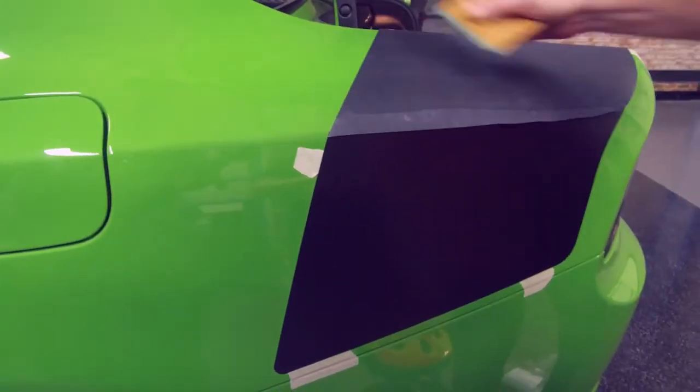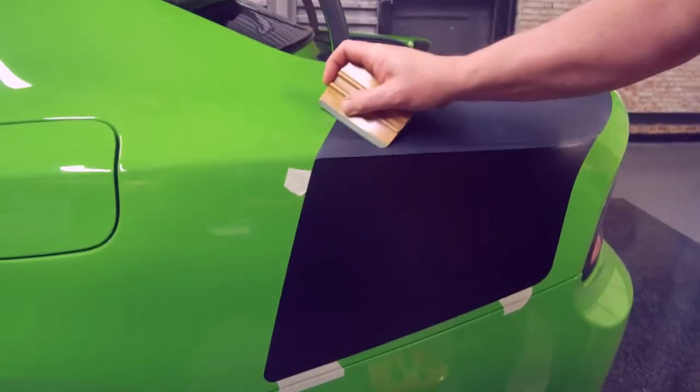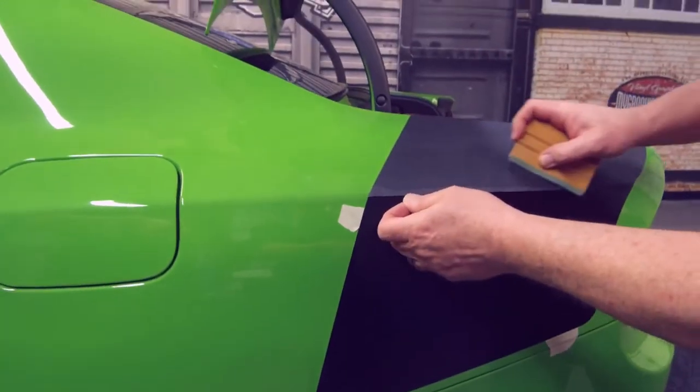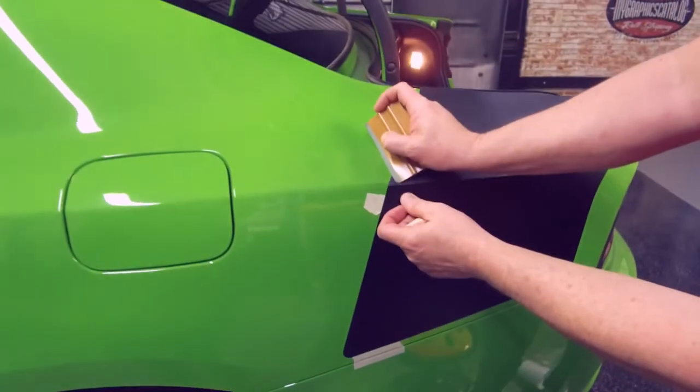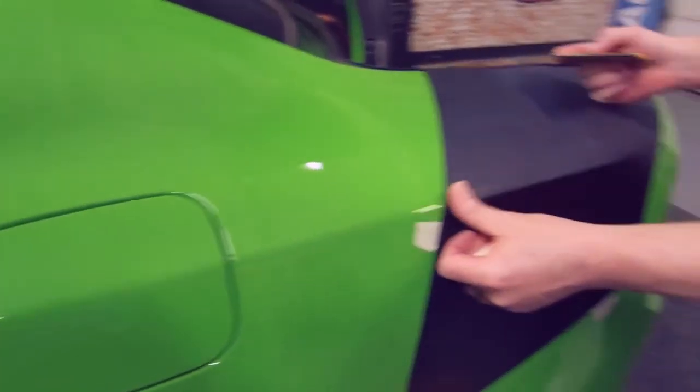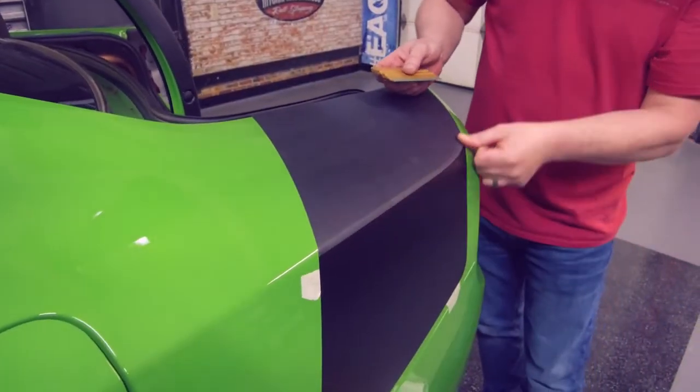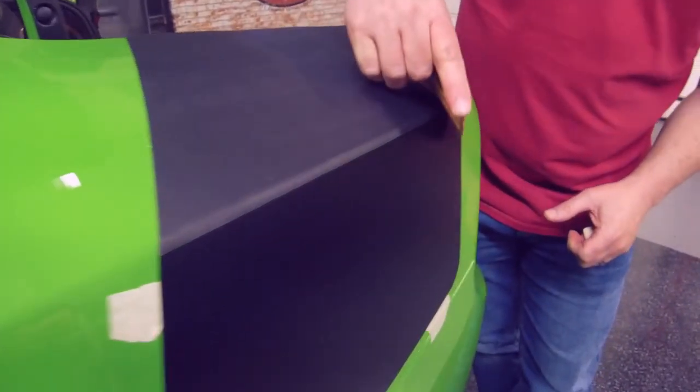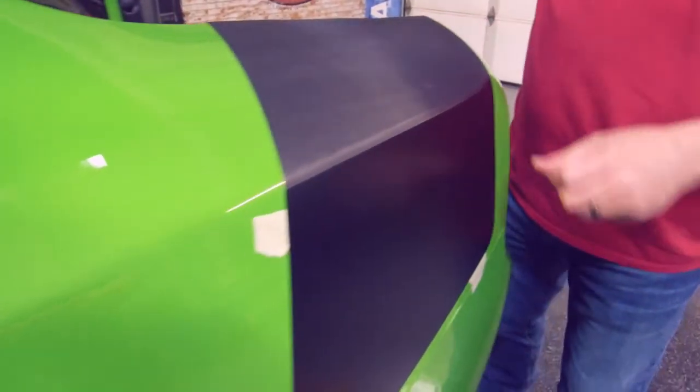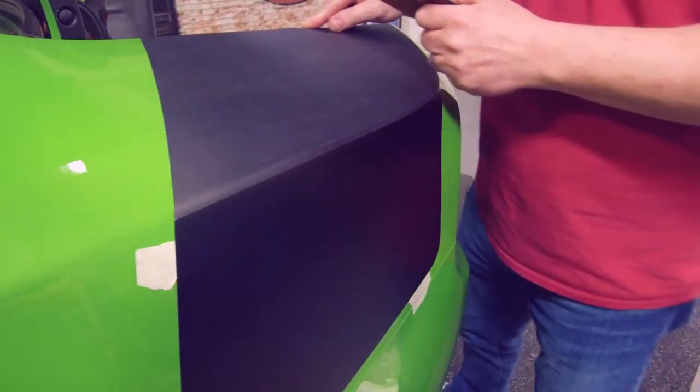Okay, squeegee strokes. This is important to see how he is squeegeeing it. He's not just going straight up and down. He's actually following the curve of the body line to make sure it's going to line up correctly. As you can see, we got a nice overlap here. It's nice and consistent. Probably looks better than the factory from what I've seen.